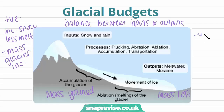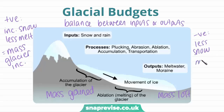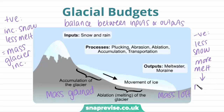A negative budget is where we have more mass lost than mass gained. So we have less snow as our input and more melt, and therefore the size of the glacier will shrink — the glacier will retreat. With a positive budget the size of the glacier is increasing and the glacier will advance.